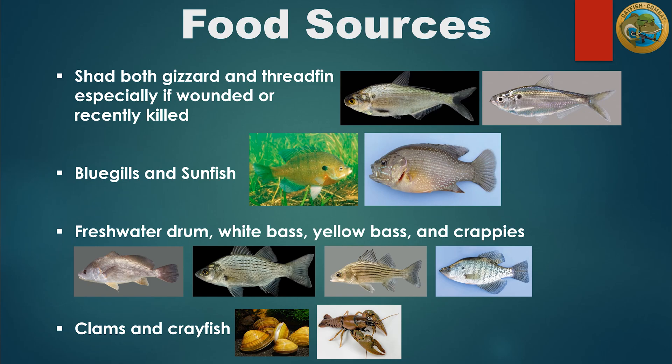Food sources for blue catfish consist of both gizzard and threadfin shad — especially wounded or recently killed shad — bluegills and sunfish, freshwater drum, white bass, yellow bass, crappies, clams, and crayfish.